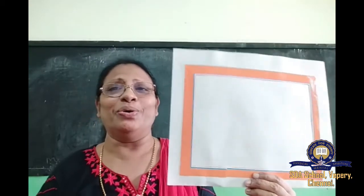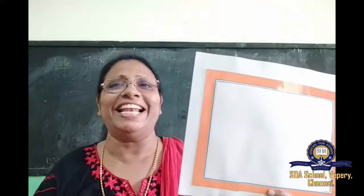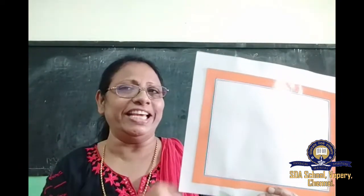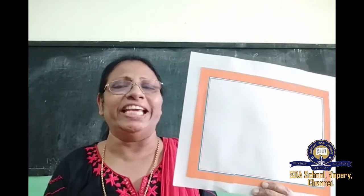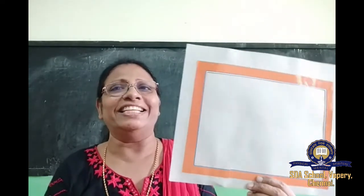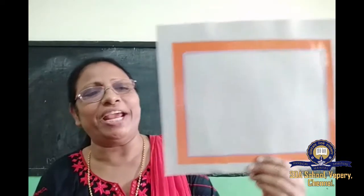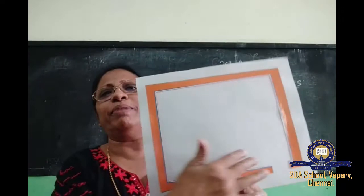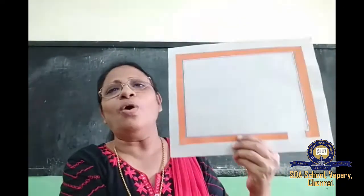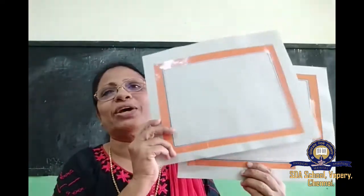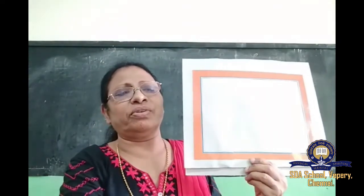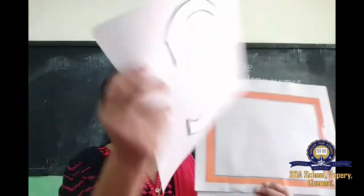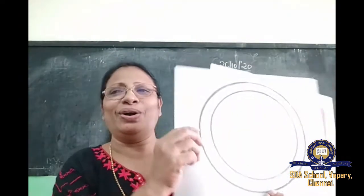Rectangle is a closed shape. Shall we spell rectangle? R-E-C-T-A-N-G-L-E, rectangle. Rectangle is a closed shape. And suppose another one — this is also a rectangle but there is an opening, so it is an open shape. And this other one is a closed shape.